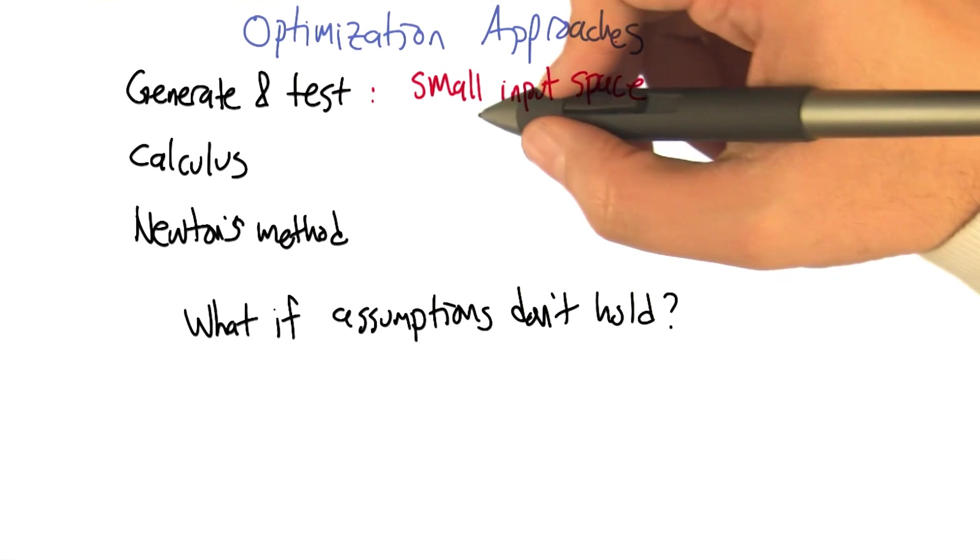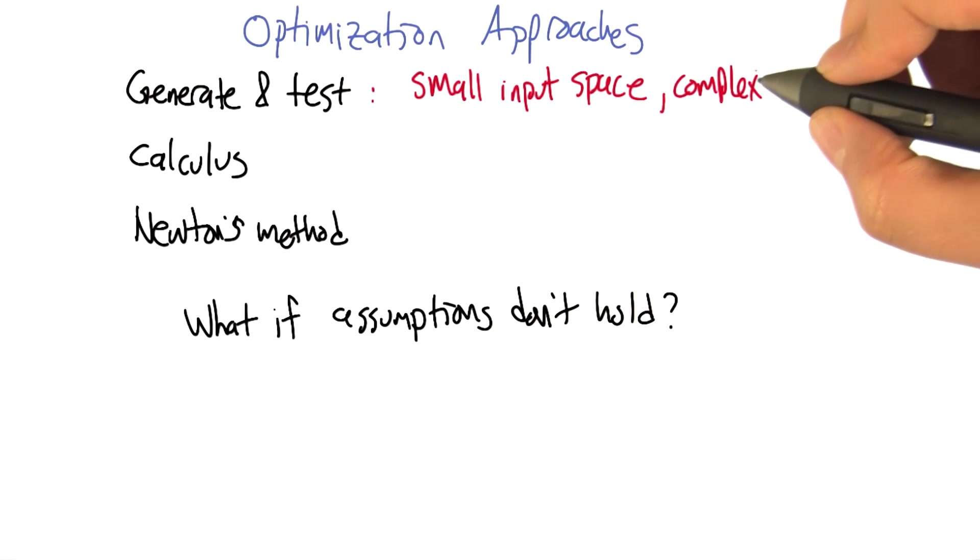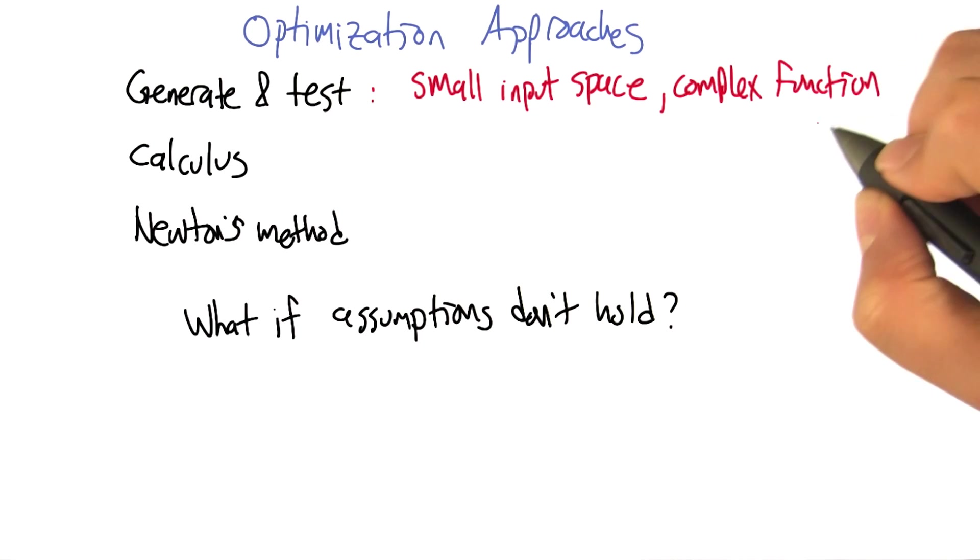And it's also particularly helpful if it's a complex function, right? Because there really isn't any other choice if the function has kind of crazy behavior like in the mod example that I gave.